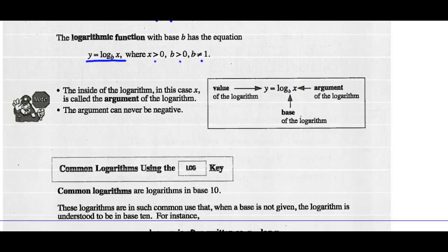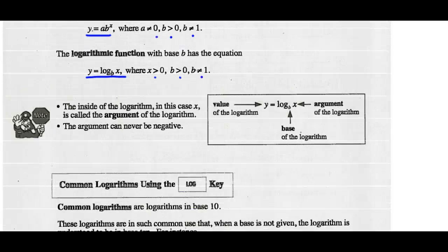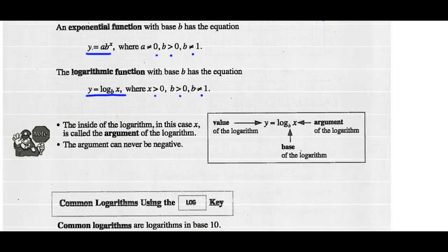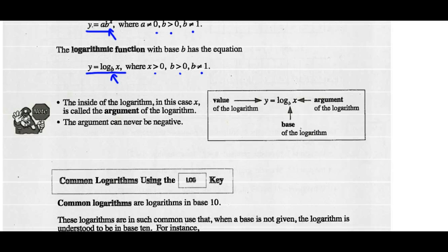Note that the inside of the logarithm is called the argument. The base of the logarithm is the same as the base of our exponential function — both bases of b. And the value of the logarithm is y.